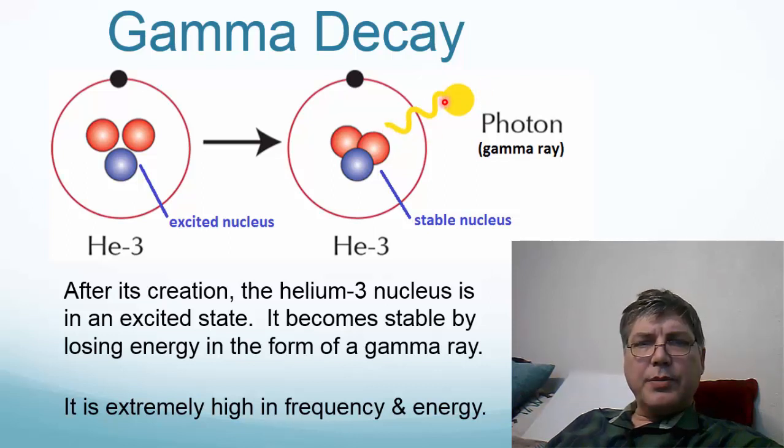Any light that comes or any electromagnetic radiation from the nucleus of an atom is technically a gamma ray, no matter what its frequency. But gamma rays are typically extremely high frequency and extremely high energy and, of course, very damaging.